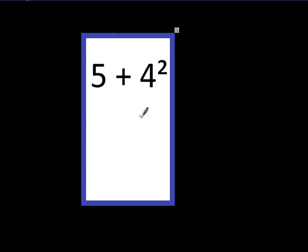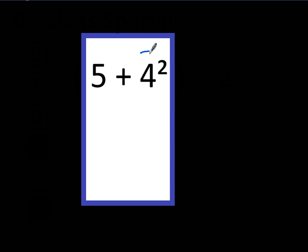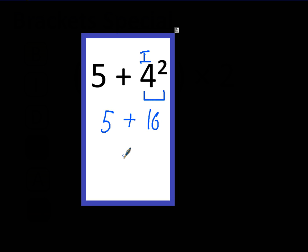Hopefully you got the answer 21, and hopefully you realise that because this is an index number, 4 squared, we need to work it out first, which is 16, and that leaves us with the adding 5 to do. So you get the answer 21.